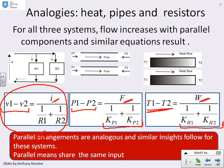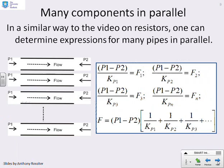When you add a parallel path in an electrical circuit, you allow more current to flow. When you add a parallel path in a fluid system, you allow more fluid to flow. When you add a parallel path in a heat system, you allow more heat to flow. By parallel, we emphasize, we mean they're driven by the same inputs — the same voltage difference, the same pressure difference, or the same temperature difference.